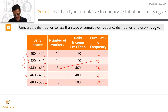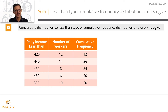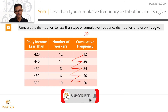How do you present this in an examination? Write 'daily income less than' and list the upper end of each class interval, then write the number of workers and the cumulative value. The first cumulative value equals the first frequency — 12. Then 12 plus 14 equals 26, 26 plus 8 equals 34, 34 plus 6 equals 40, and 40 plus 10 equals 50. Step one is done.